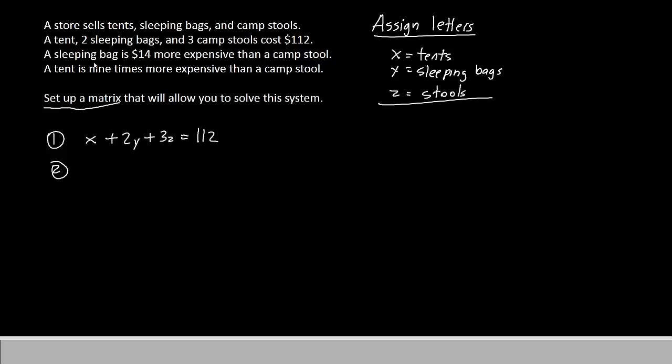Let's move to the next line. It says a sleeping bag is $14 more expensive than a camp stool. The sleeping bags are y, then we see the word is, that means equal to, and then we have $14 more expensive than a camp stool. Let's start with the camp stools first. We know that's z, and if it is $14 more expensive, we say plus 14 to show that.